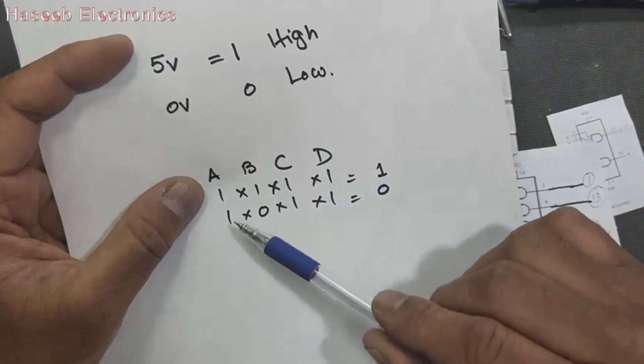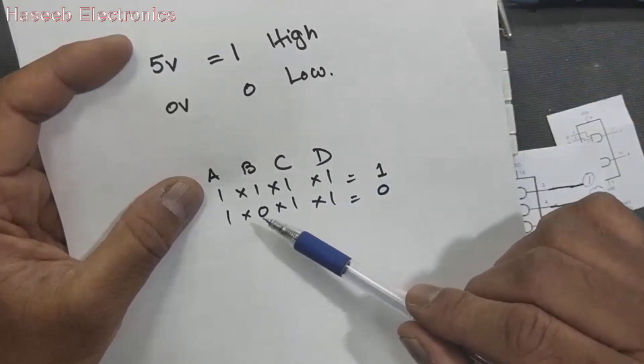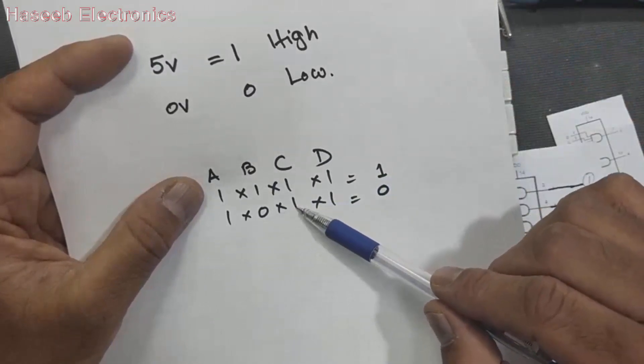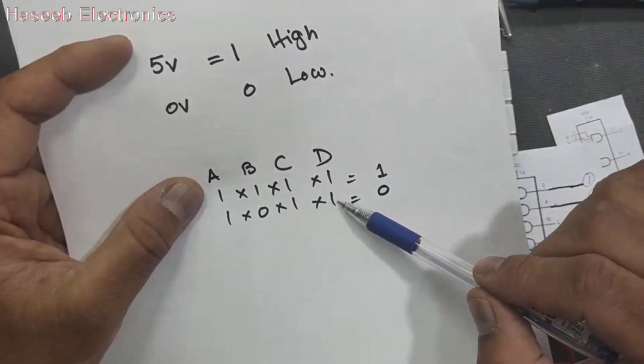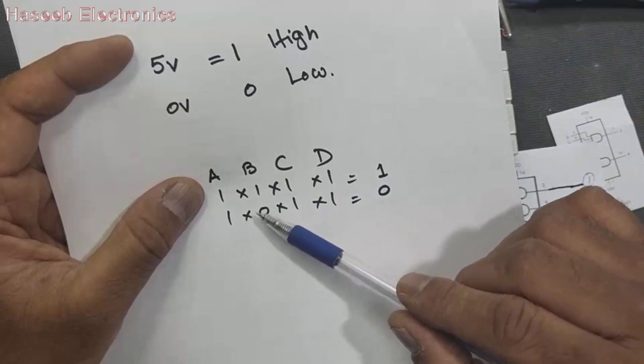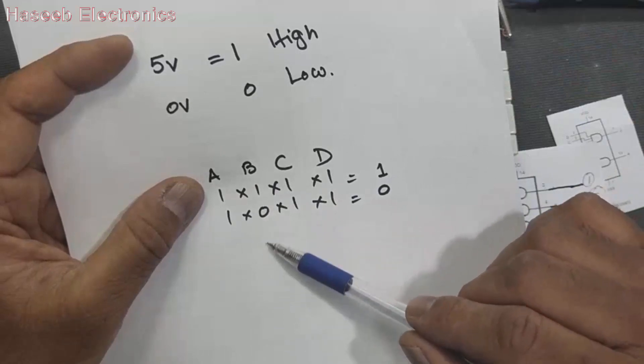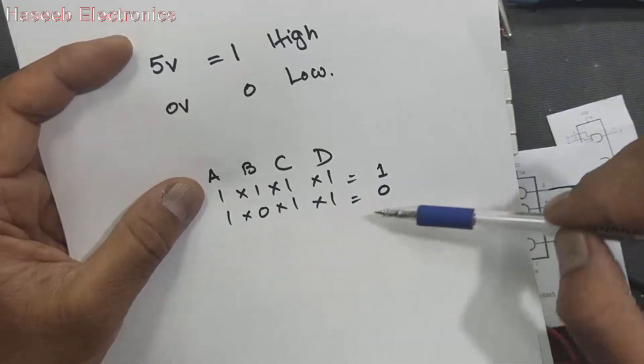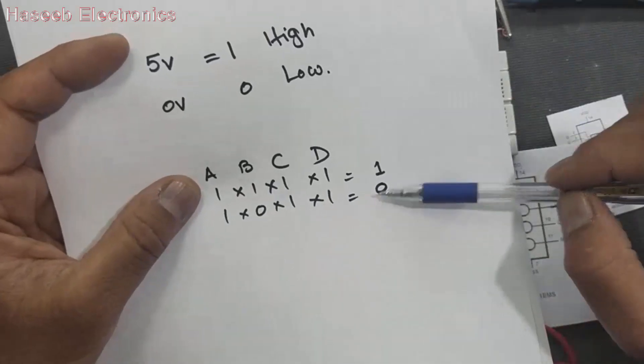But in a practical sense, if we have 5 volts, 0 volts, 5 volts, 5 volts — here one input is at 0 volts, one input is low — the output will go low.